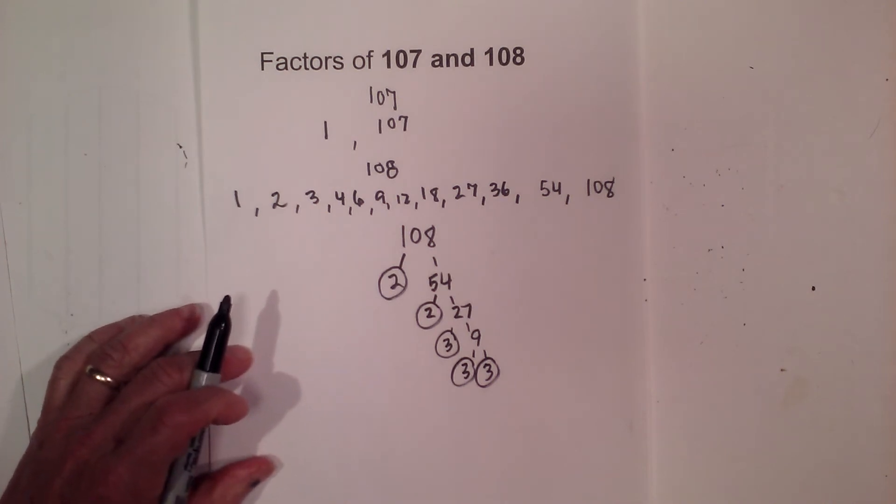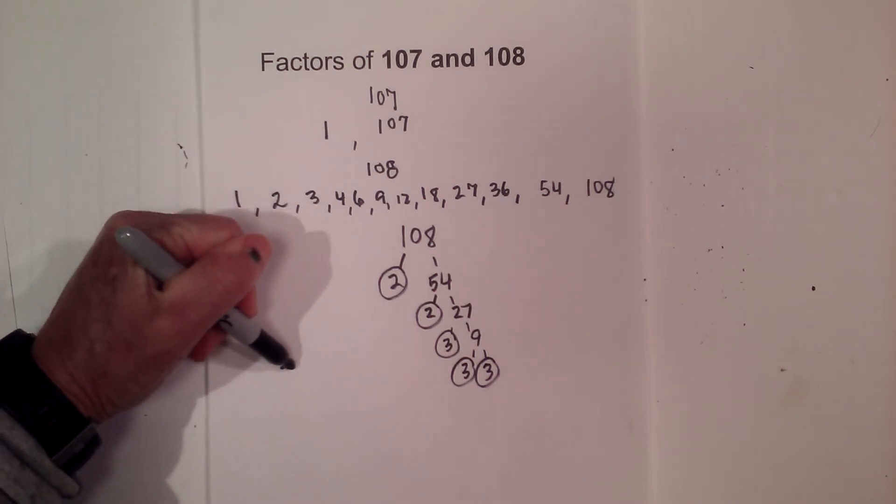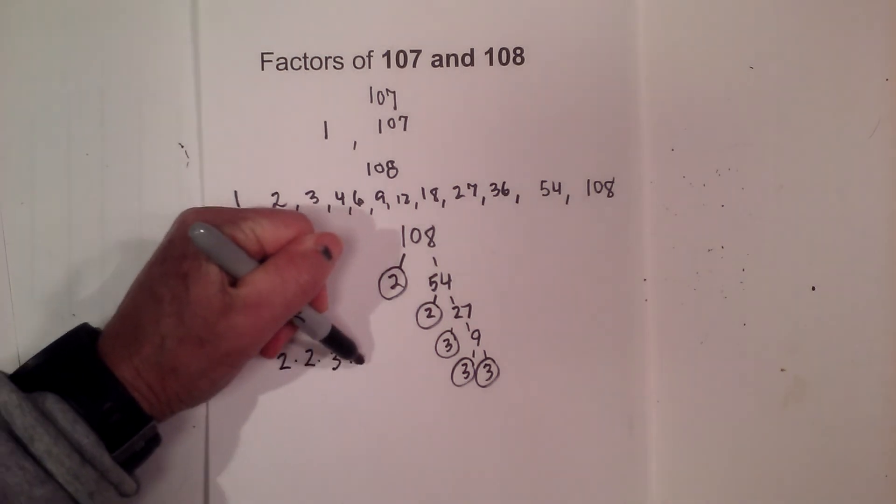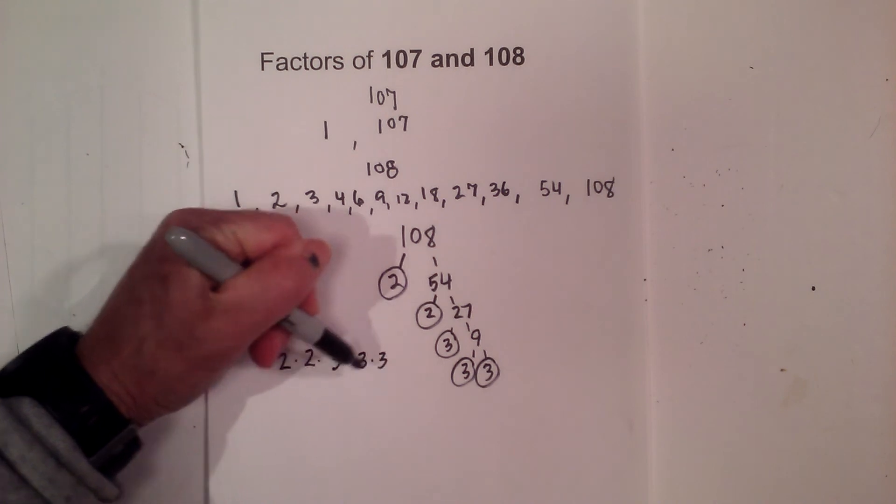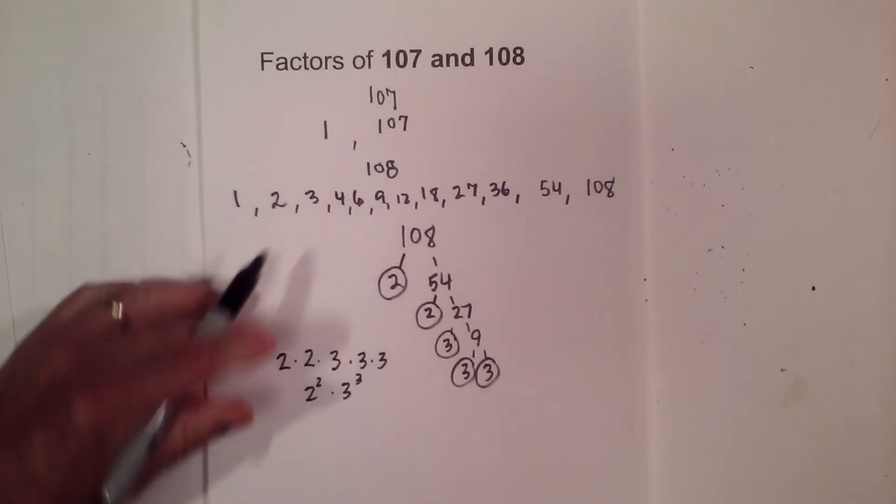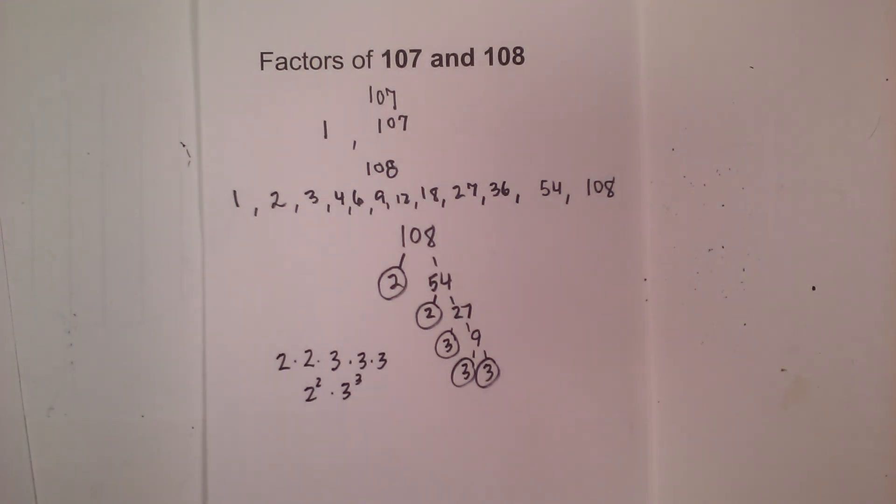So the prime numbers of 108 are 2 times 2 times 3 times 3 times 3 or 2 squared times 3 cubed. So there we go. The factors of 107 and 108.